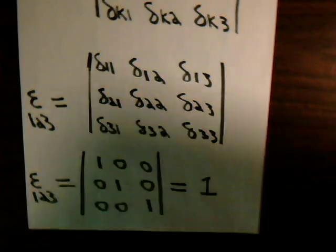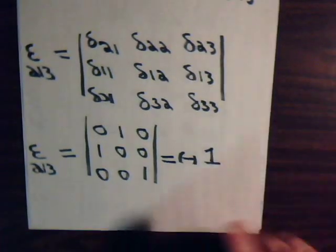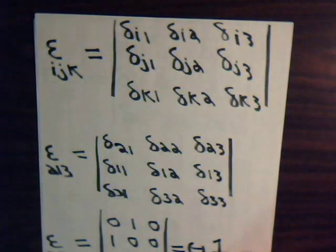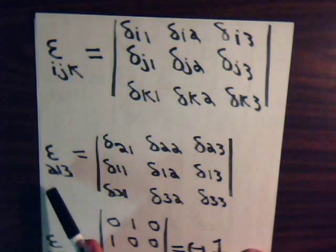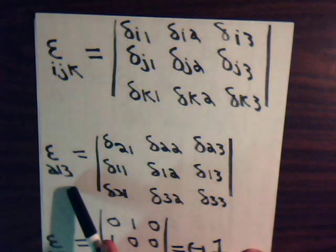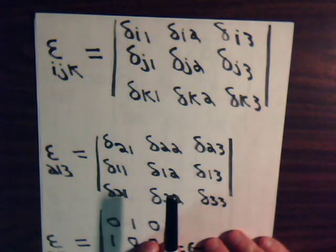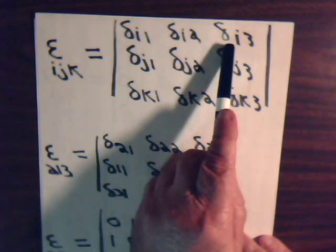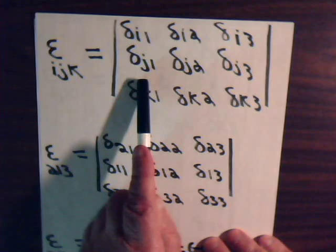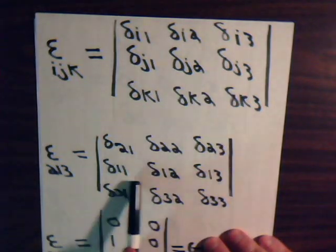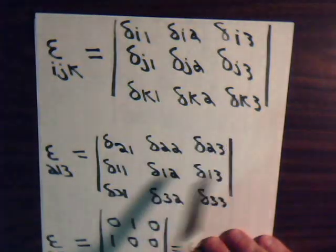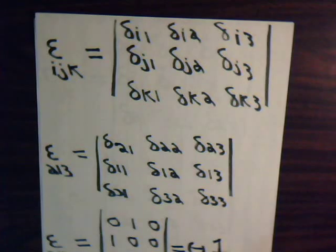Now let's go back to our formula and let i be equal to two, j equal one, and k equal to three. So now we have two, two, two giving us this for the first row. j equals one, so we have one, one, one generating this for the second row. k remains at three, so we have three, three, three for the third row.